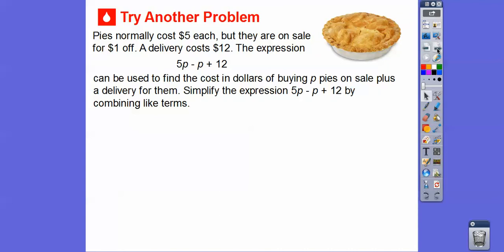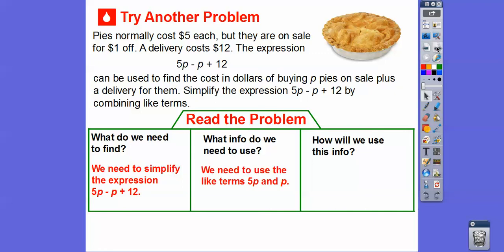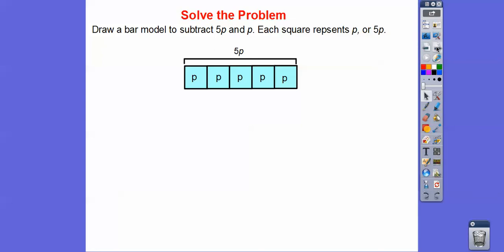Here's another problem. Pies normally cost $5 each but are on sale for $1 off, and delivery costs $12. The expression 5p minus 1p plus 12 — where 5p is $5 per pie, 1p is the dollar off, and 12 is the delivery charge — gives the cost of buying p pies on sale with delivery. We need to simplify 5p minus p plus 12 by combining like terms. We'll draw a bar model, where each square represents p. Here's 5p.